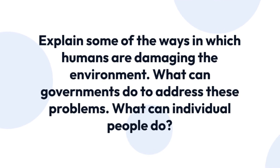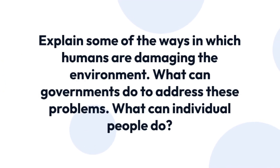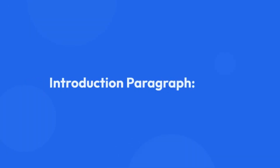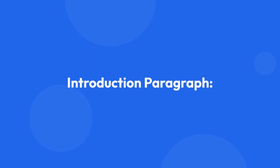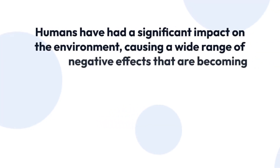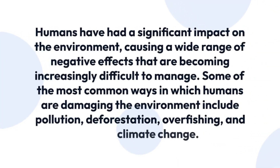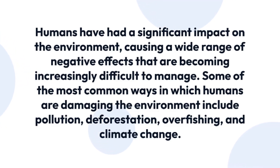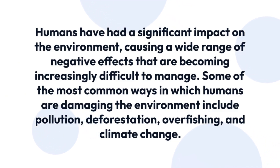Explain some of the ways in which humans are damaging the environment. What can governments do to address these problems? What can individual people do? Humans have had a significant impact on the environment, causing a wide range of negative effects that are becoming increasingly difficult to manage. Some of the most common ways include pollution, deforestation, overfishing, and climate change.